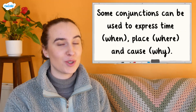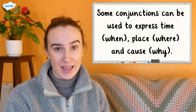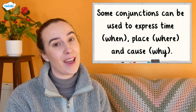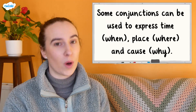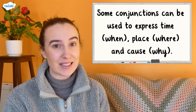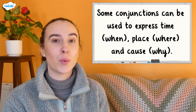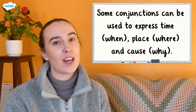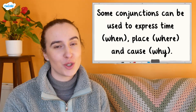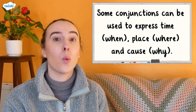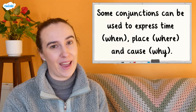A conjunction used to express time will show us when something happened. One being used to express place will help show us where something happened. Finally, a conjunction used to express cause will show us why something happened.